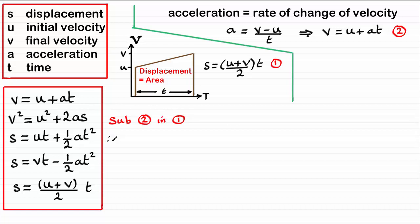And if we do that, what we end up with is s equaling u plus, instead of v, it's going to be another u plus at. So we've got u plus another u plus at. That's all divided by two, and we multiply that by t.